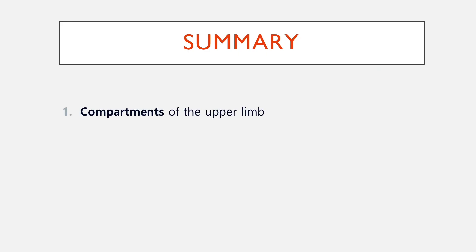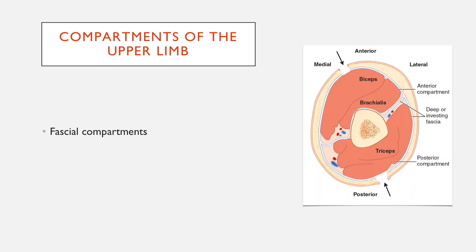Today I'll talk about the compartments of the upper limb and the muscles of the upper limb. Starting off with the compartments: when we say compartments of the limb, we're talking about fascial compartments. Fascia is connective tissue, and within the limbs there are sheets of fascia that split it into different parts.